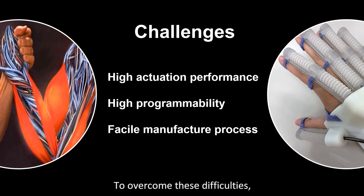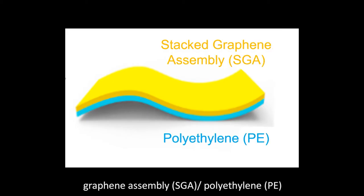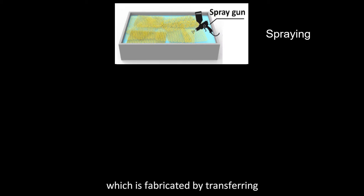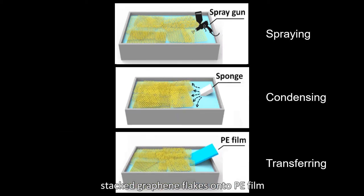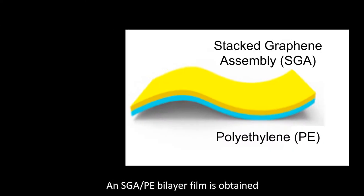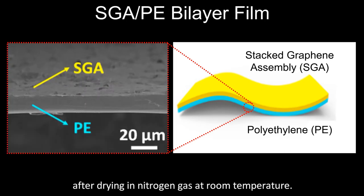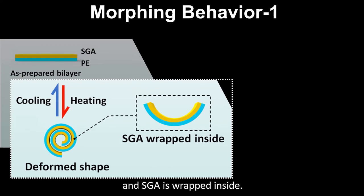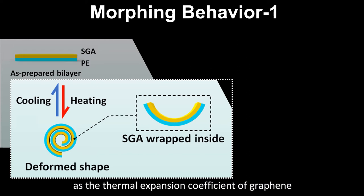To overcome these difficulties, we develop a stacked graphene assembly polyethylene bilayer material, which is fabricated by transferring stacked graphene flakes onto PE film via a non-mirror blow-jet technique. An SGA-PE bilayer film is obtained after drying in nitrogen gas at room temperature. As prepared, the SGA-PE bilayer delivers a bending and curling into a roll when heated, with SGA wrapped inside. This is easy to understand as the thermal expansion coefficient of graphene is negligible compared with PE.